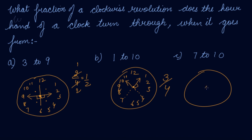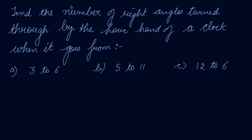Now let's look at 7 to 10. The clock goes from 7 and jumps to 10. It has only covered one out of four parts, so only one-fourth is the fraction.